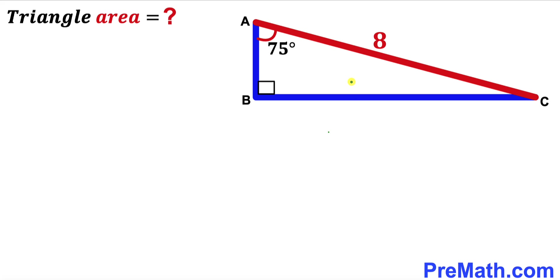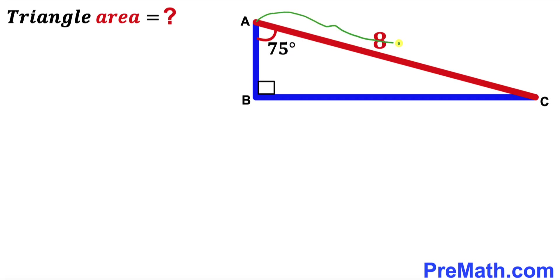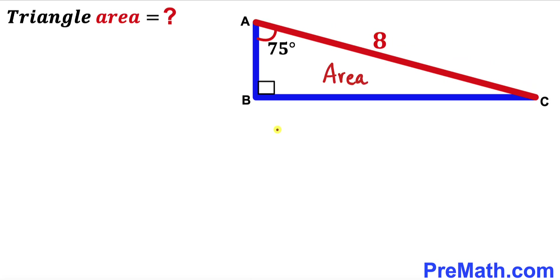Welcome to pre-math. In this video we have got a right triangle ABC, as you can see in the given diagram, such that angle BAC is 75 degrees and the hypotenuse AC length is 8 units. Our task is to calculate the area of this triangle ABC.